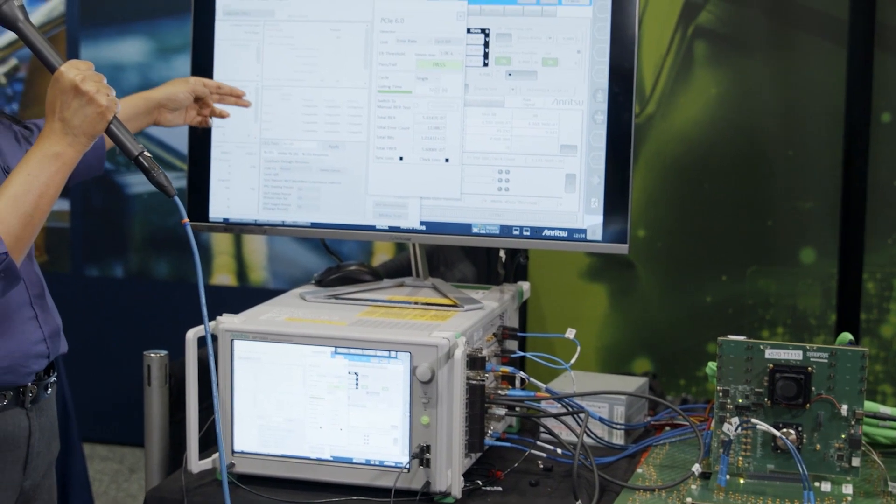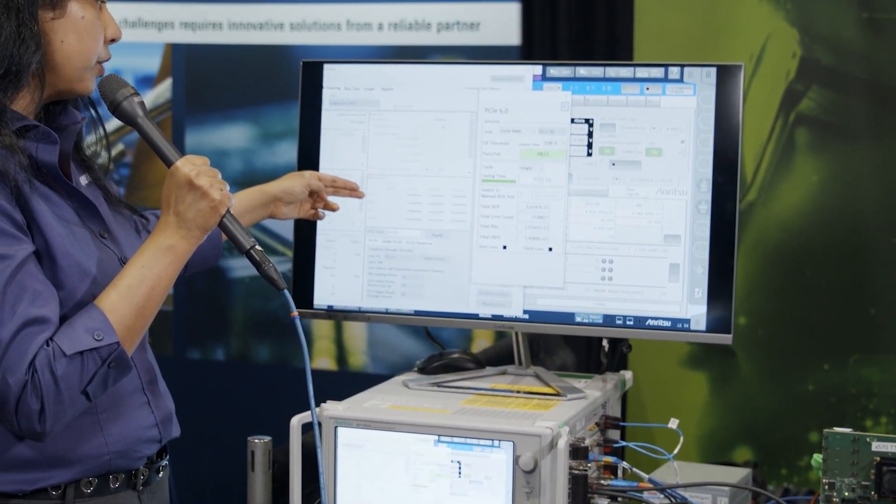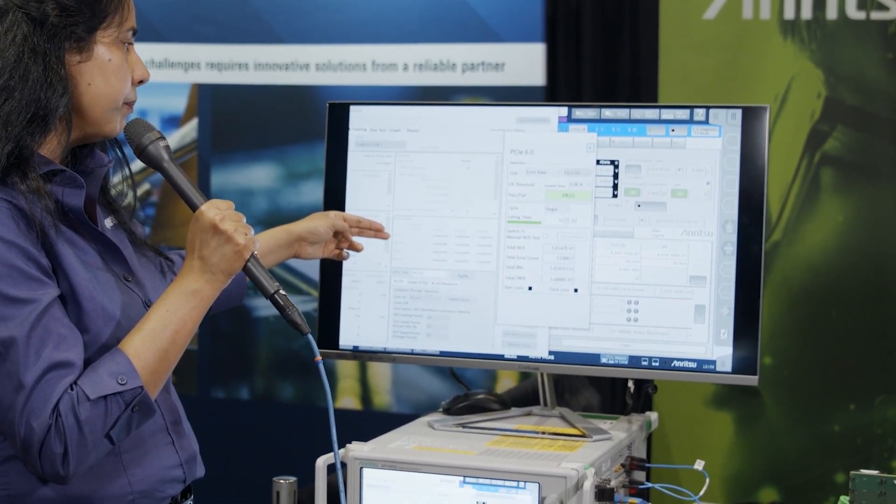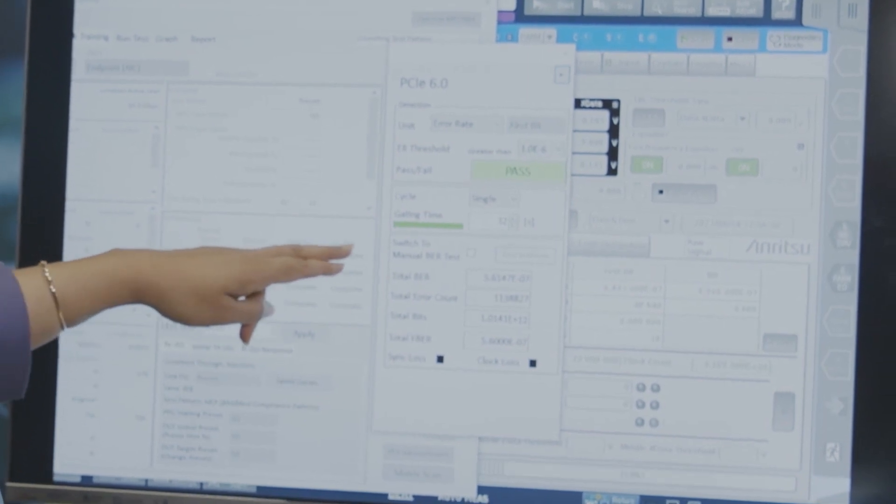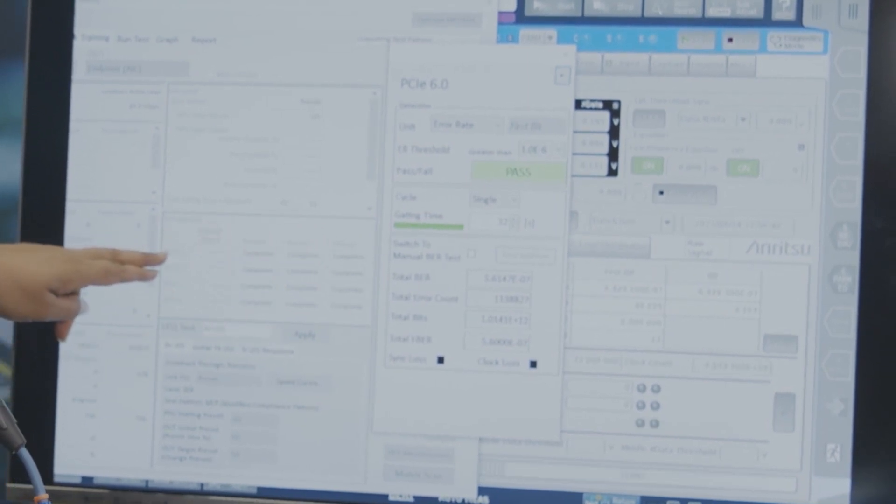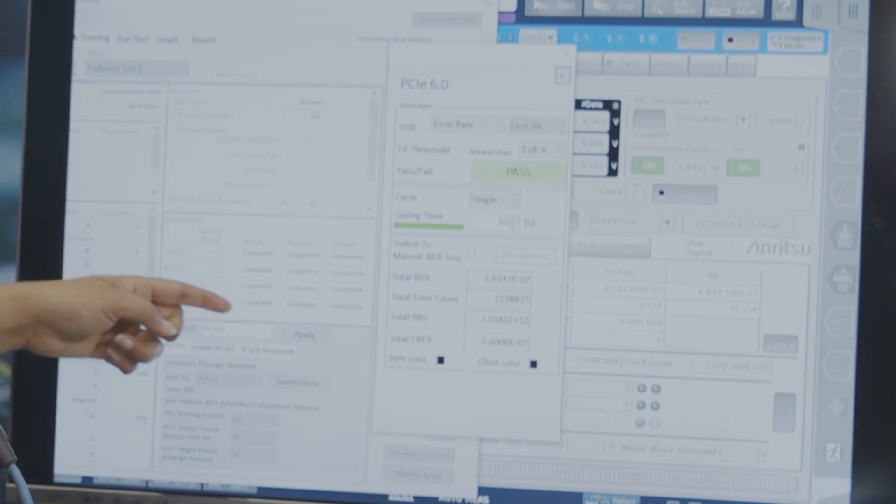As you can see in the GUI itself, it starts from Gen 3, showcasing here from Gen 3 with Phase 1, Phase 2, Phase 3 equalization has been completed, same as Gen 4, Gen 5, and finally Gen 6. As you can see, Gen 6 all Phase 1, Phase 2, Phase 3 recovery EQ has been completed.